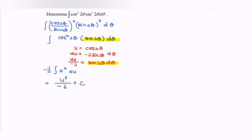Substitute back, we have negative 1 over 6 times cos cubed 2 theta plus c. Or we can rewrite this as negative cos cube 2 theta over 6 plus c.